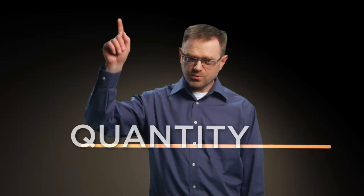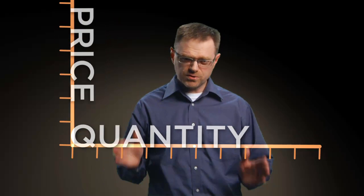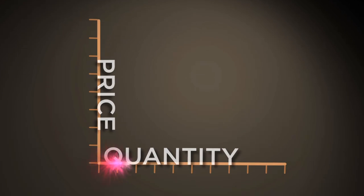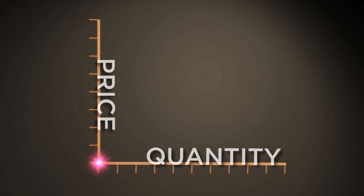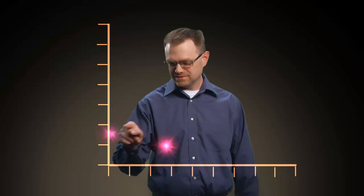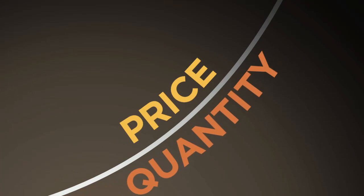Picture this: if we put the quantity of widgets on the x or horizontal axis of the graph and the price of widgets on the y or vertical axis, we can start to plot the relationship between the two variables. The same principle can be applied at each possible price, and by connecting the points on the graph, we'll begin to see an upward sloping line.